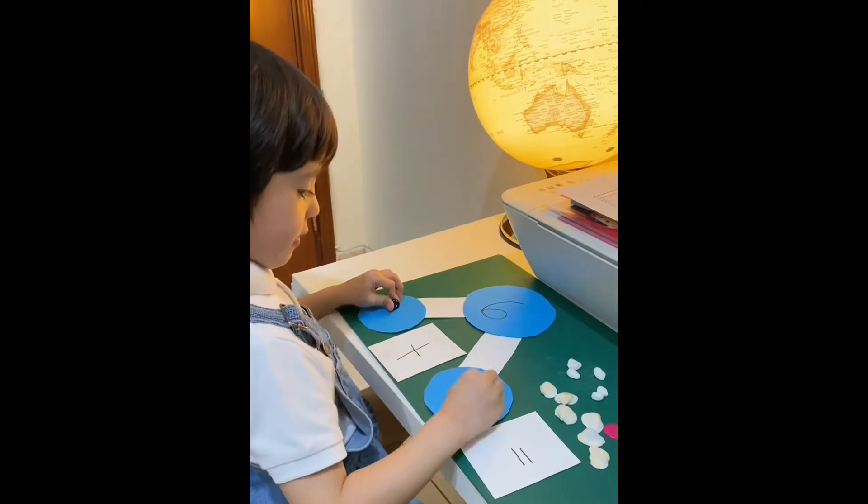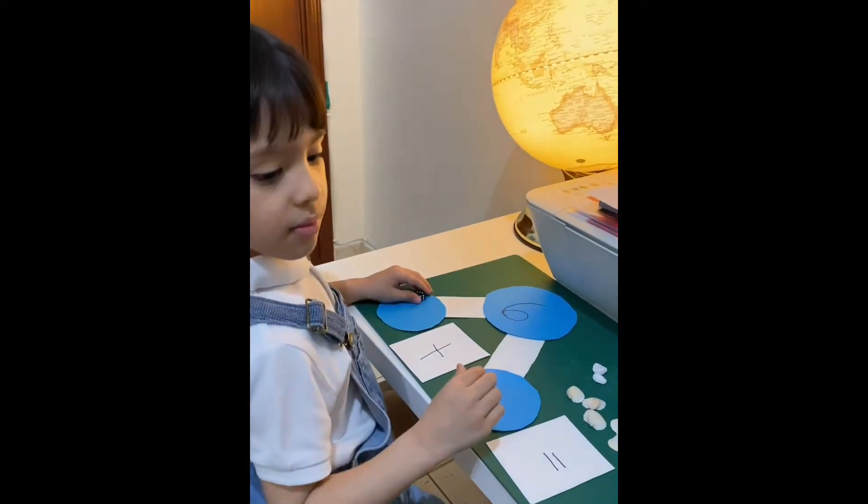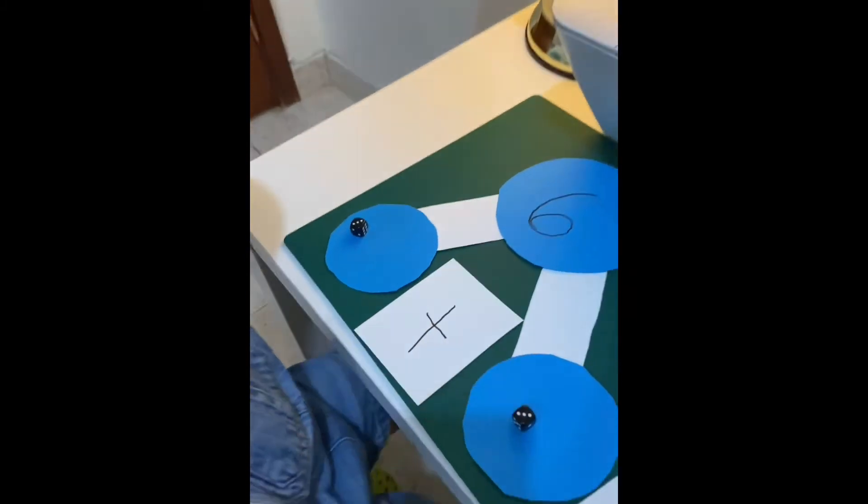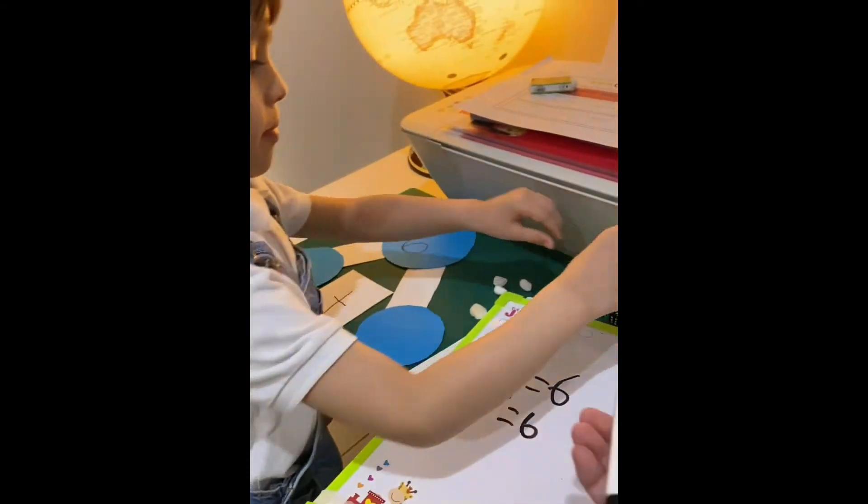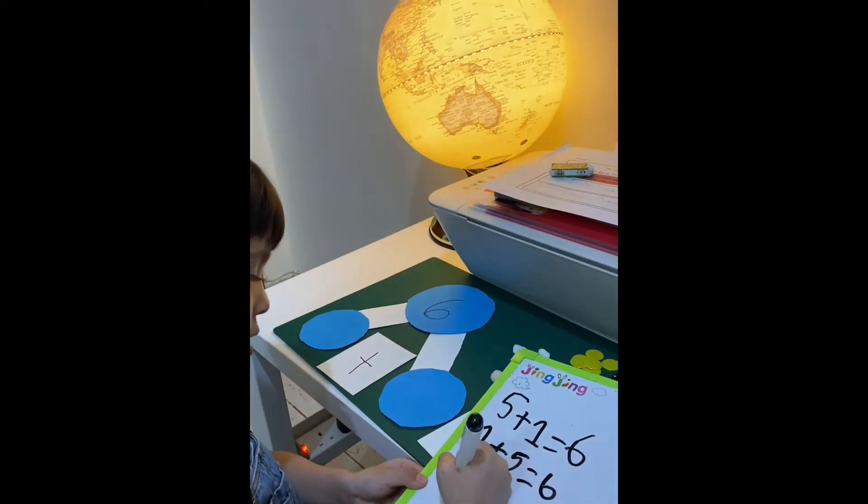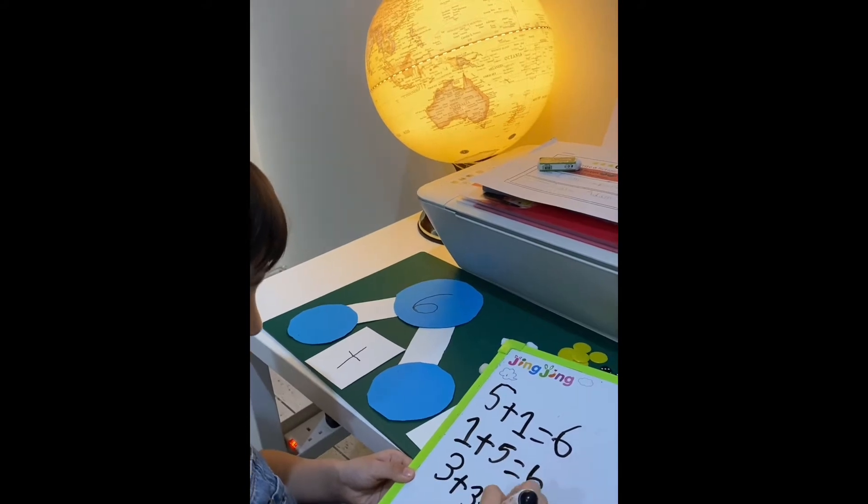3 plus 3 equals 6. Okay. Show me. Is it 3 plus 3? Show me. 3 plus 3 equals 6. Okay. Good job. Here. Put it here. Write it here. Please.